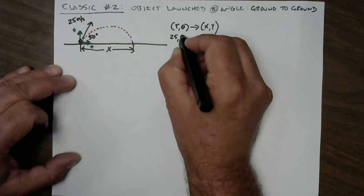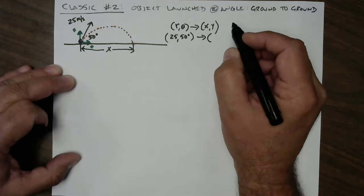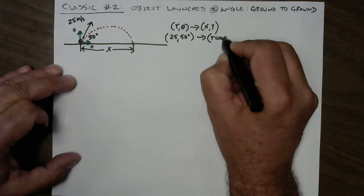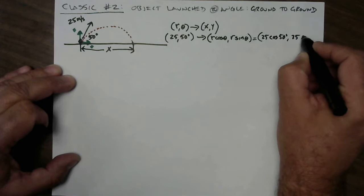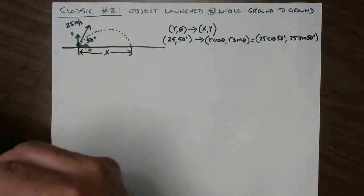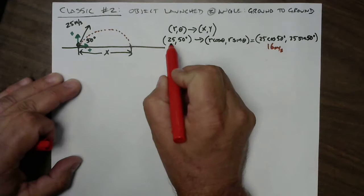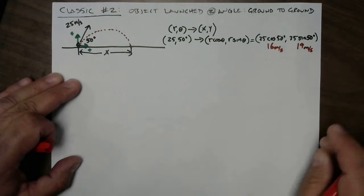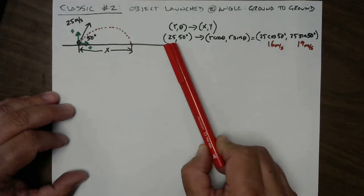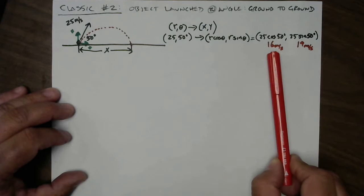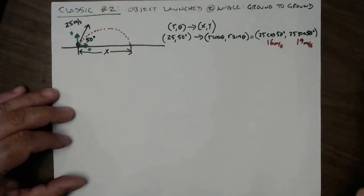Our list of knowns and unknowns has vi_x and vi_y, not vi_r and vi_theta, so we need to do this conversion. Our original vector is 25 m/s at 50 degrees, and we turn that into x and y using the recipe: x = r·cosθ and y = r·sinθ. That gives us 25·cos50° and 25·sin50°. Putting these into a calculator: 25·cos50° = 16 m/s and 25·sin50° = 19 m/s. So kicking the ball at 25 m/s at 50 degrees means 16 m/s of horizontal motion and 19 m/s of upward motion.